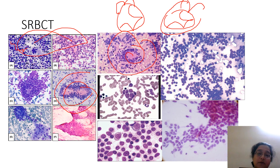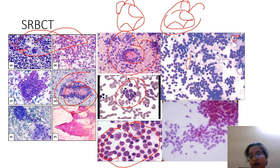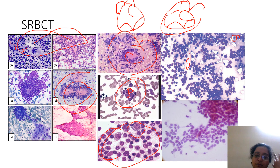A uniform small round blue cell population with occasional large cells is more suggestive of hematolymphoid. One very important feature I look for are lymphoglandular bodies — they're small but present in the image. Lymphoglandular bodies only appear when it's a lymphoma. Another small cell lesion, less common in children but seen in adults, is small cell lung carcinoma on FNAC, which shows a characteristic nuclear molding pattern where one nucleus molds over another.